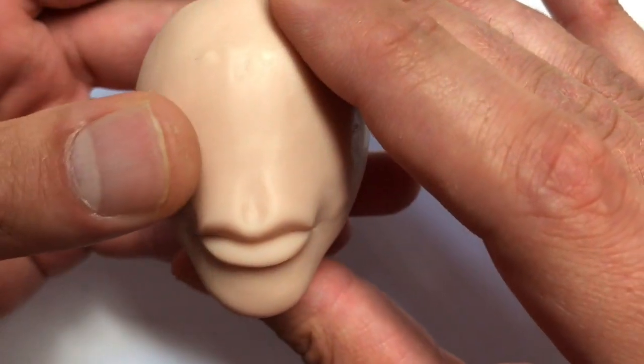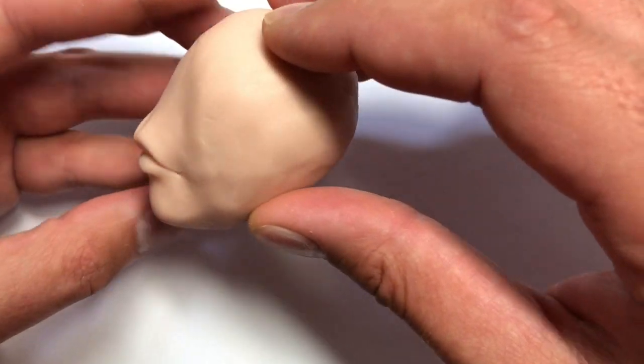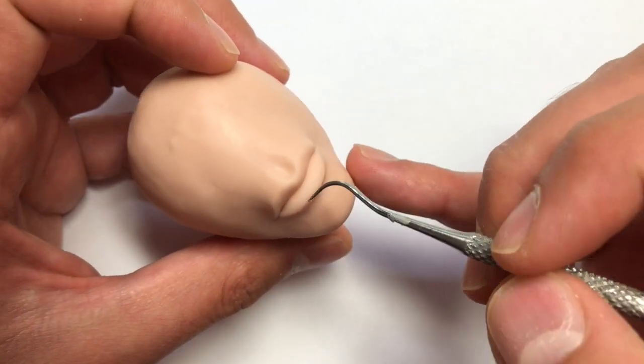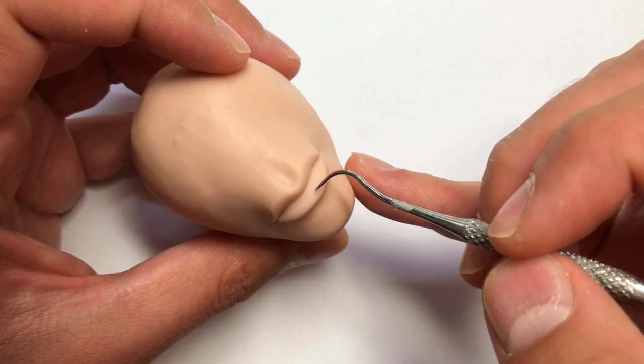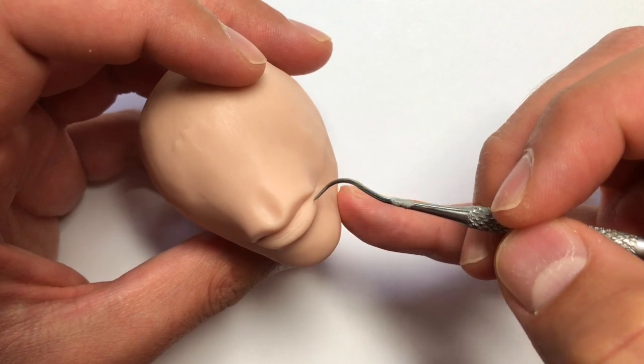All you really have to do from this point is just go in there and add more details. I'm going to go in and add a couple wrinkles and lines. There are both horizontal and vertical lines on people's lips.